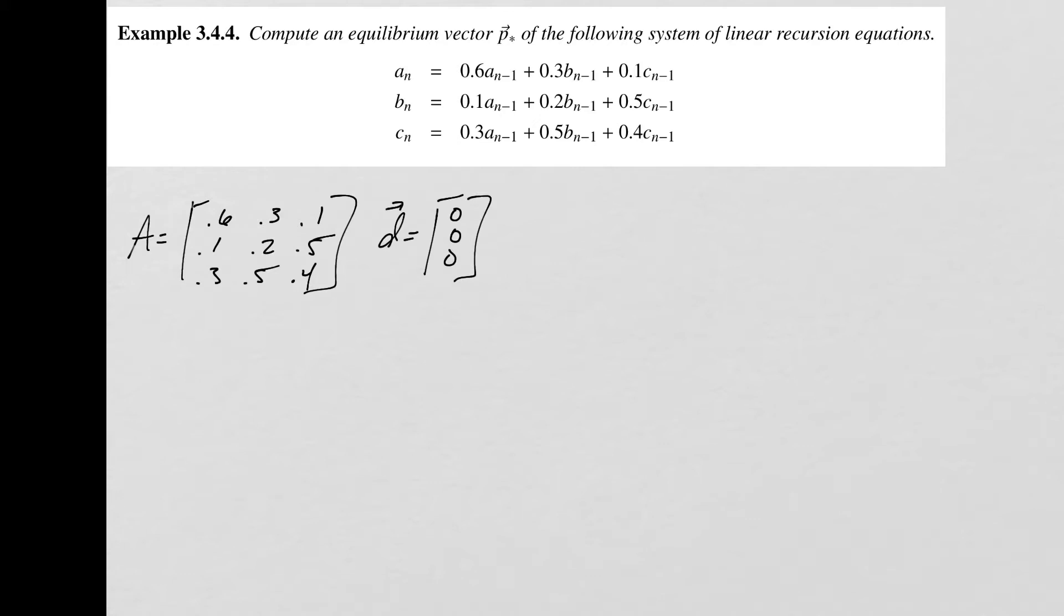With these two things, now we can solve for our equilibrium vector. To find this equilibrium vector P star, we can just do (I minus A) inverse times D, where this I is just the identity matrix. That's on the formula reference card.